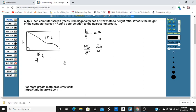So now we can use Pythagorean theorem. We can say that (16/9 h)² plus h² equals 15.6².